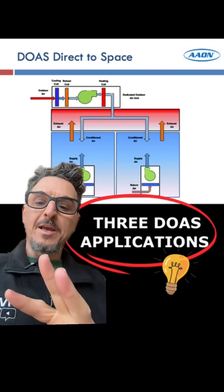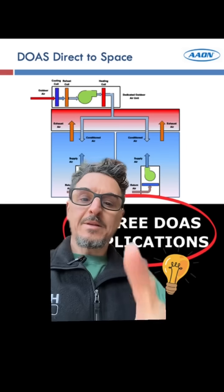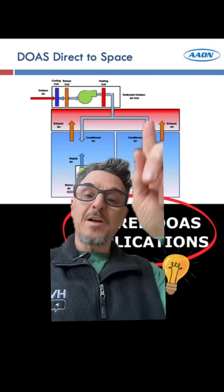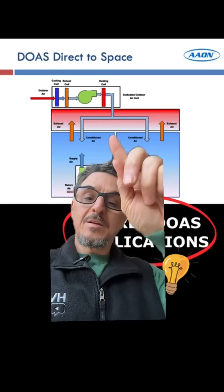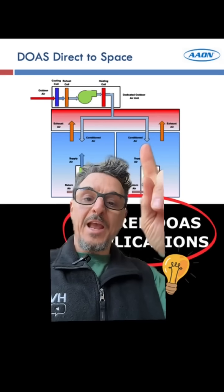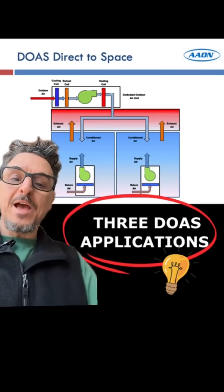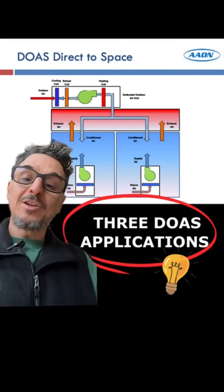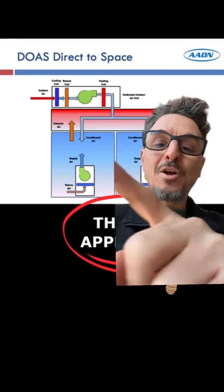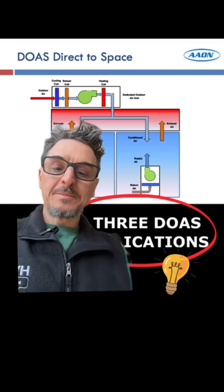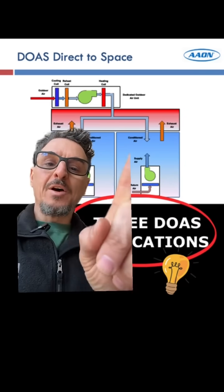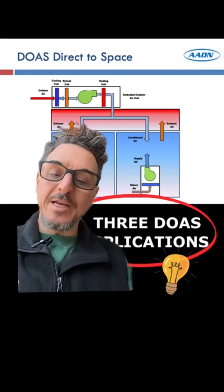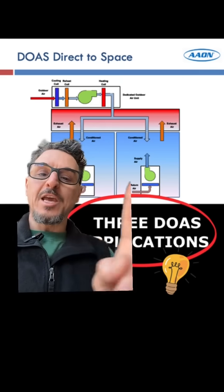Now I'm going to go over the three common application types. What you see here is what I see most: the Dedicated Outdoor Air System providing dehumidified air directly to the space, and then you have units in the space handling the sensible load. These can be air handling units, fan coils, or VRF units. The OA is handling all of your latent load for the space, and these units are just handling the sensible.